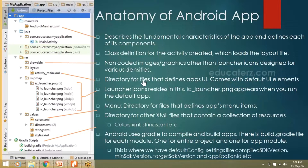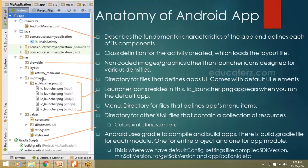Another subdirectory inside the resource folder is called mipmap. The mipmap directory holds your launcher icon — the icon you see on your home screen for apps like WhatsApp or your email app. All launcher icons are placed in the mipmap directory.